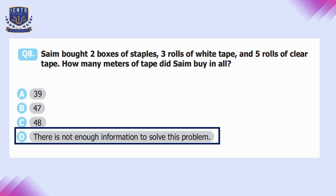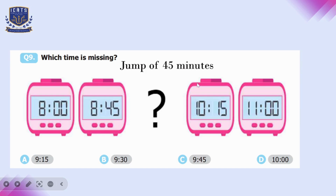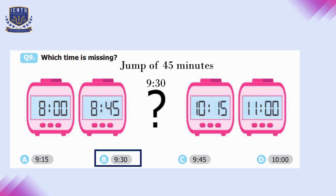Question number nine: which time is missing from the clock sequence? The clocks show 8:00, 8:45, a gap, 10:15, and 11:00. The pattern is a jump of 45 minutes each time. Adding 45 minutes to 8:45 gives 9:30. So option B, showing 9:30, is the correct answer.